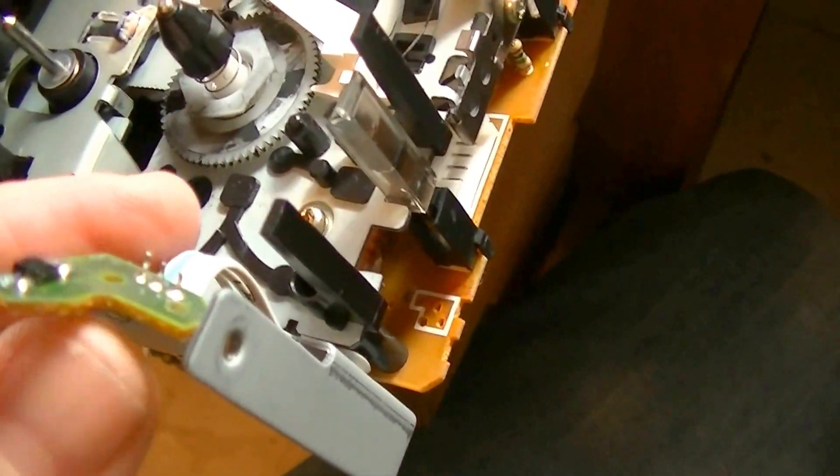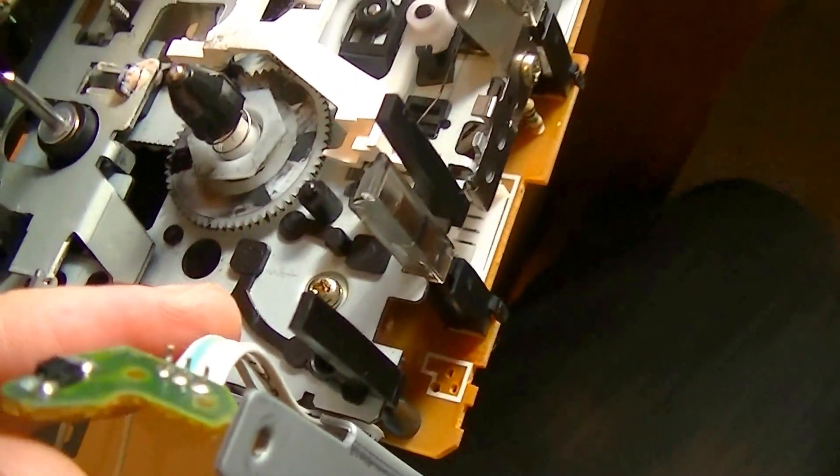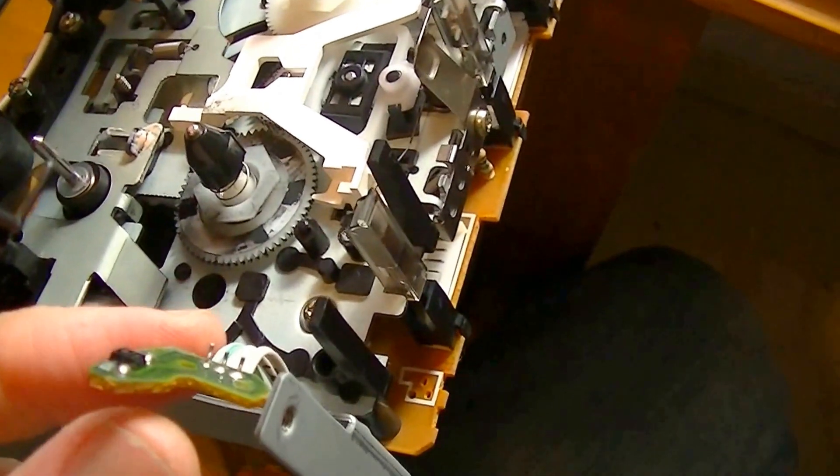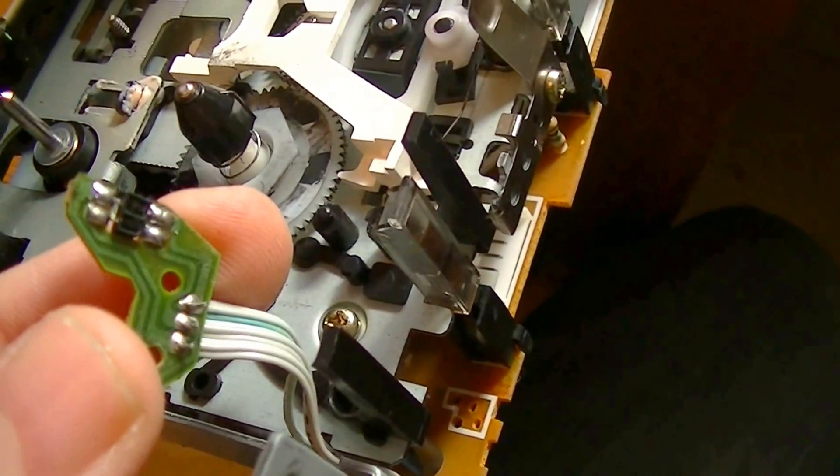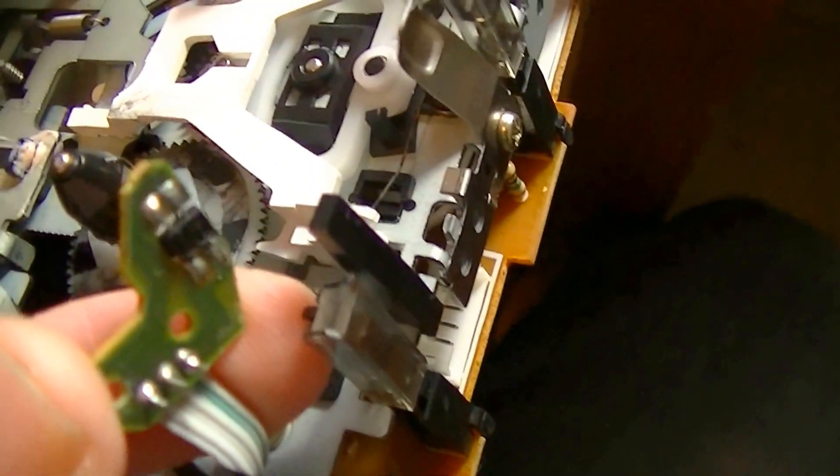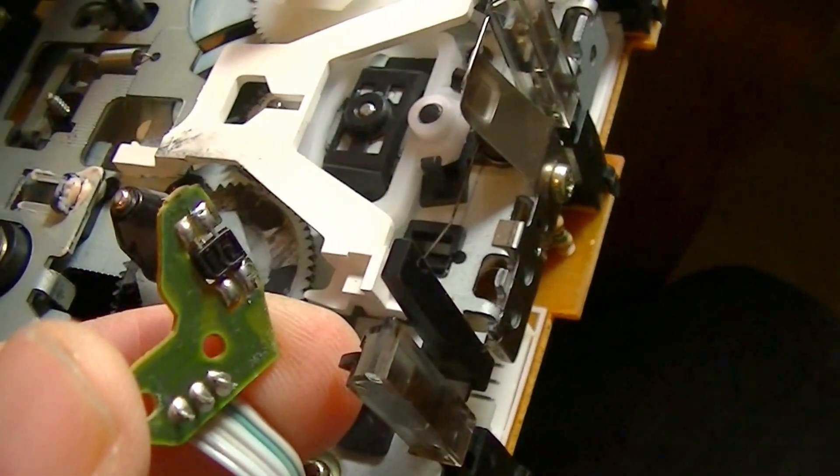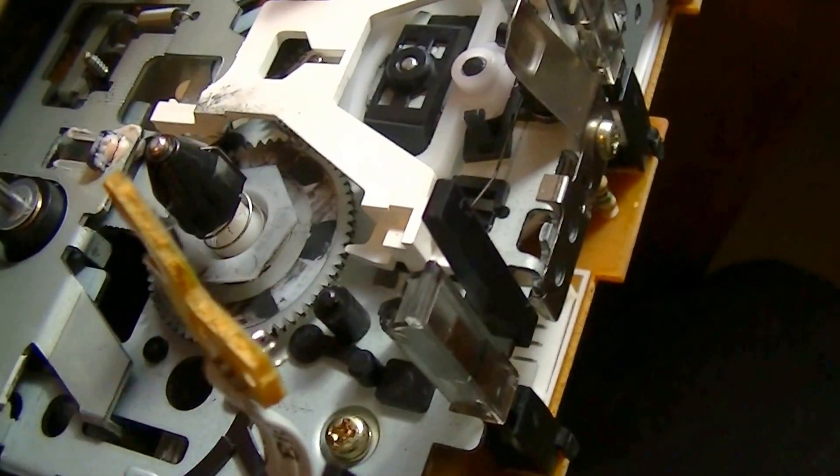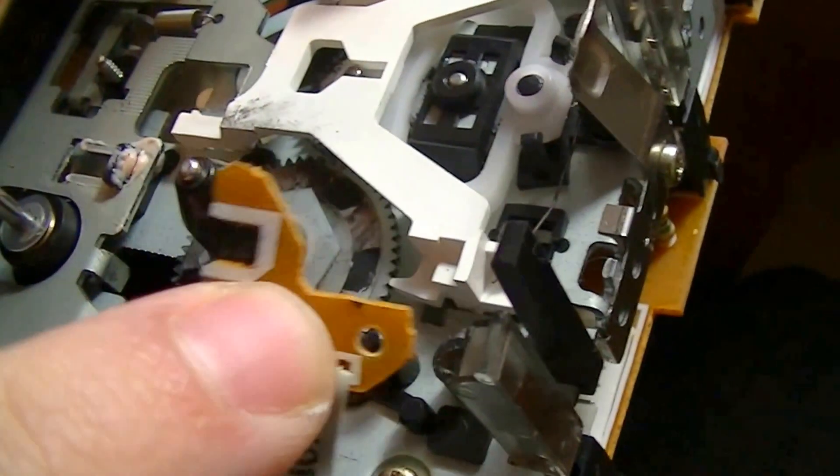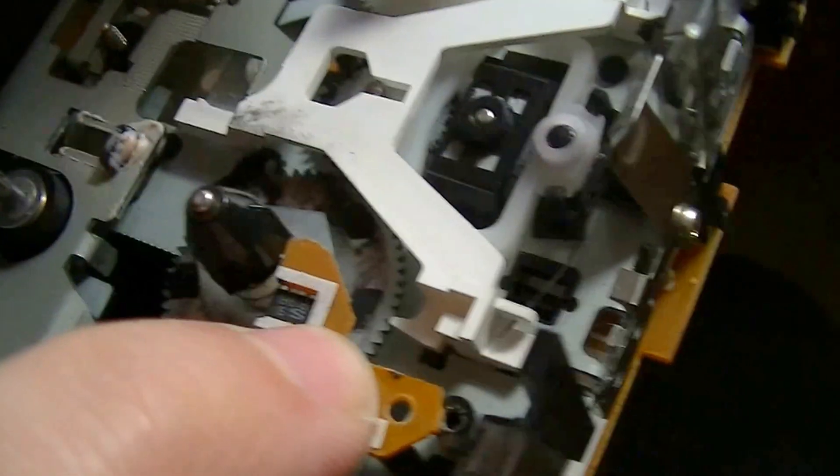Here we have another example. In this case, we have a Yamaha mechanism and the autostop has the same principle. This is the LED and transistor combination. This part is mounted here, this way.